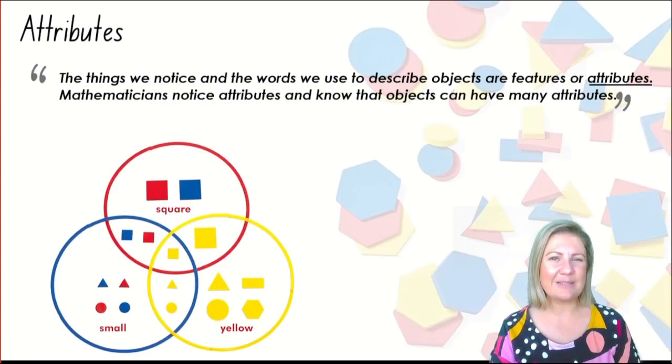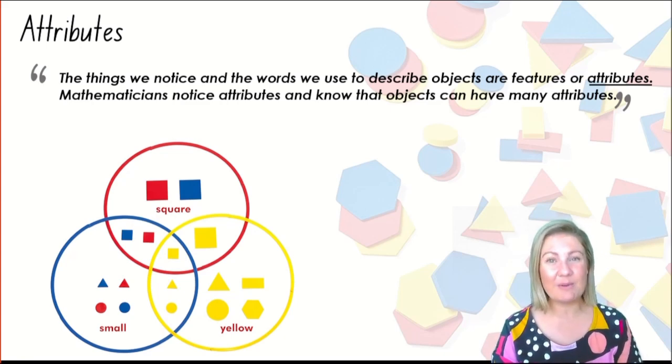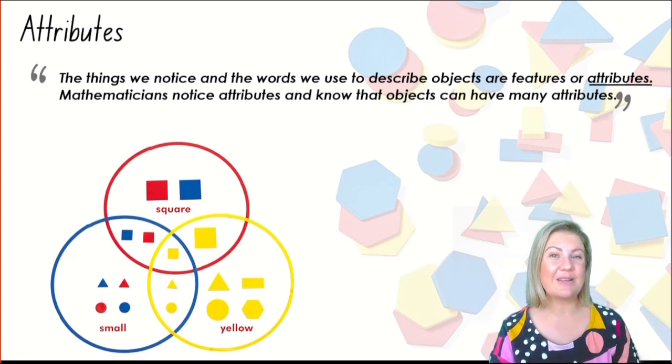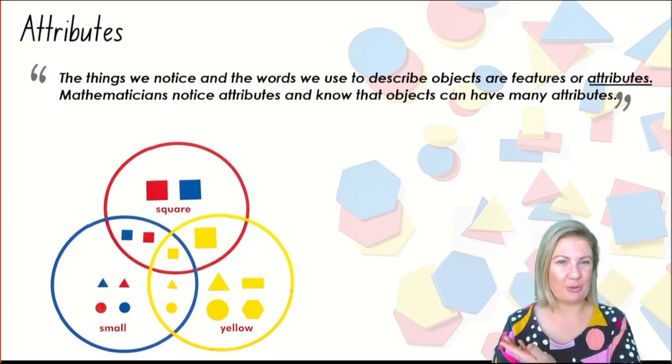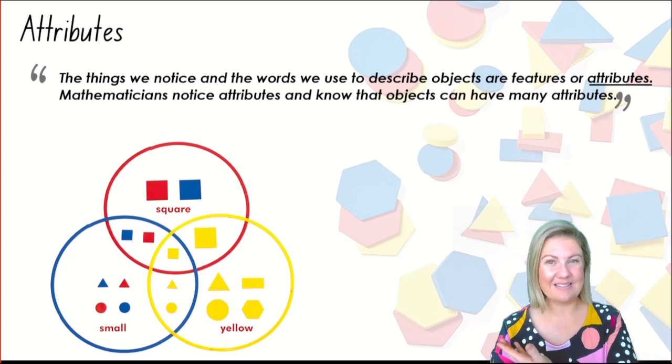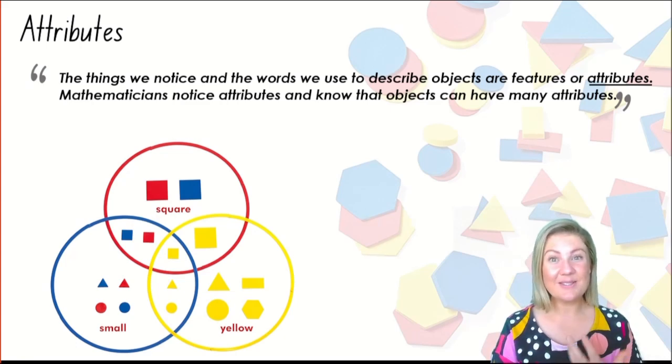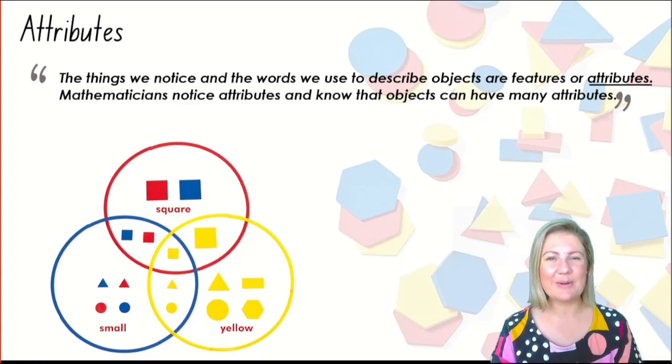Remember, it's a little bit like the word attributes. The things that we notice about an object are attributes. And when we're talking about 2D shapes, we can talk about some of the things that we notice. There are edges, sides or corners. We can talk about whether they have curved lines or straight lines. We can also talk about things like colour. You can see some different attributes here and how they've been sorted. And we've done work with attributes before. There is so much for us to learn together when we're talking about shapes.